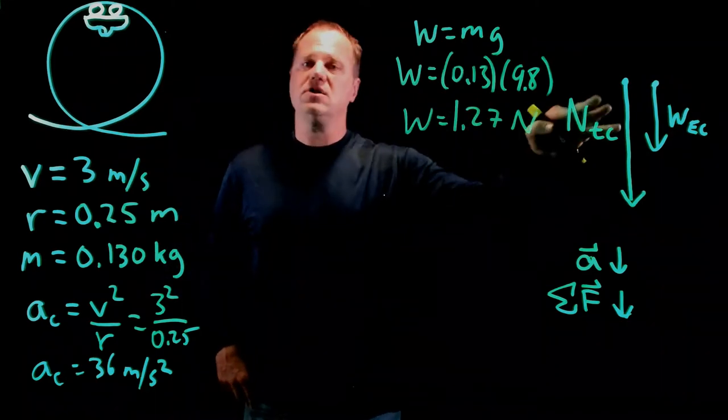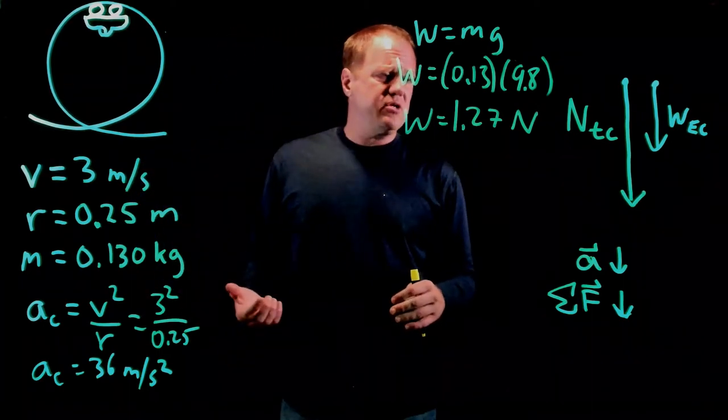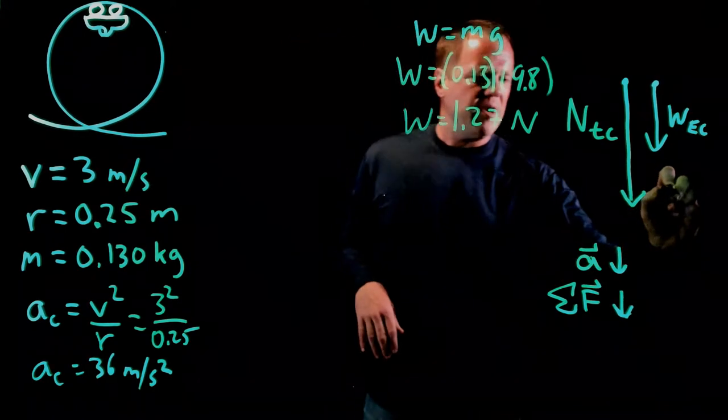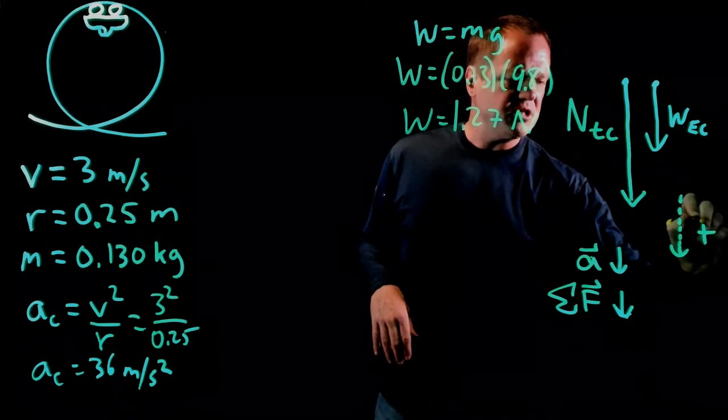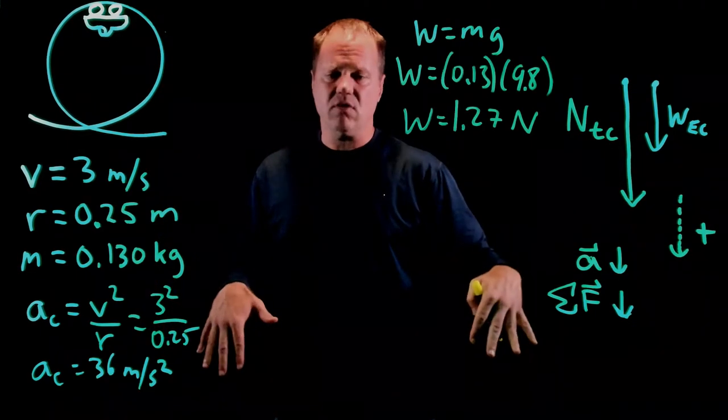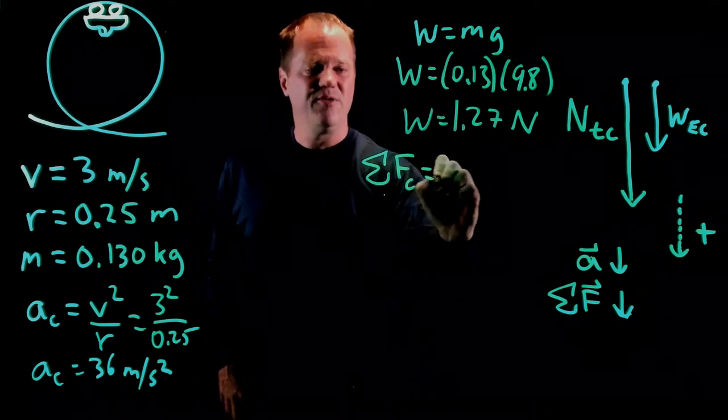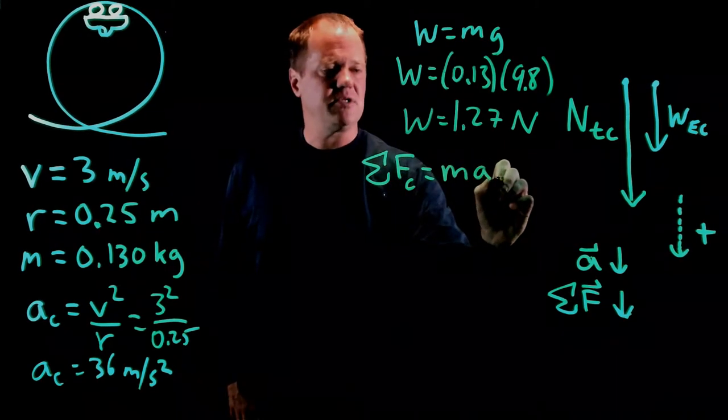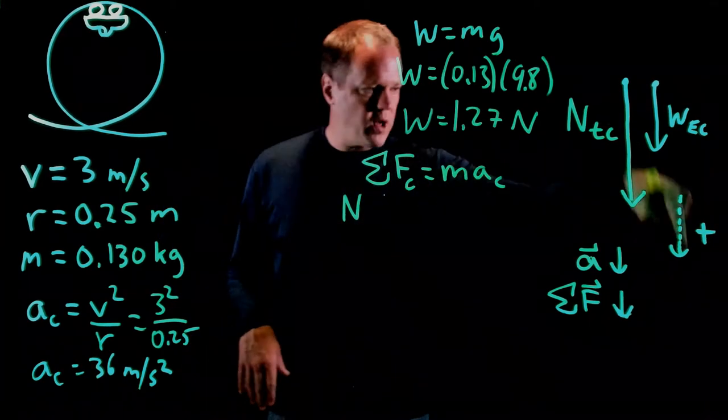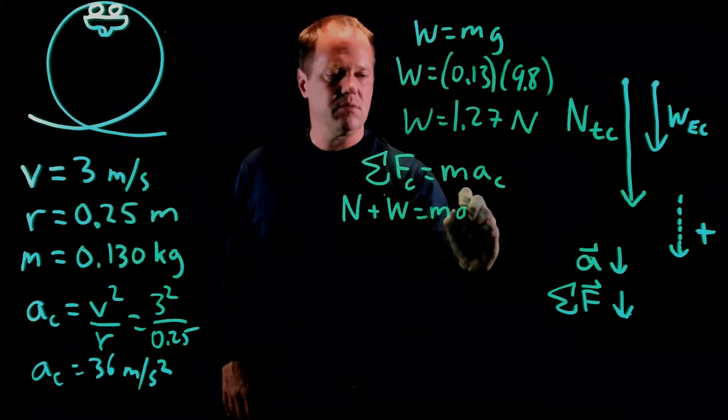And last thing is to calculate this normal force. So in this situation, everything is pointing down. Normal force down towards the center of the circle, weight force down towards the center, acceleration, net force, everything. All these vectors are down. So I'm going to have towards the center of the circle be the positive direction. You often will have down as negative, but I'm going to have the down towards the center of that circle be in the positive direction. And so the summation of the centripetal forces will be the mass times the centripetal acceleration. And then I have a normal force directed towards the center, which I've called positive. Weight force towards the center, also positive, equals ma.